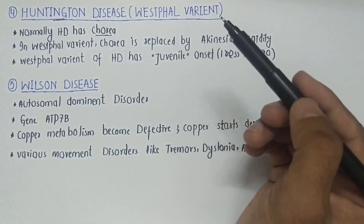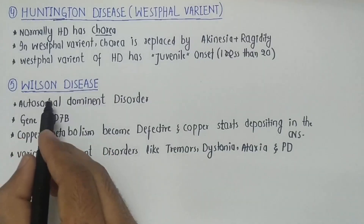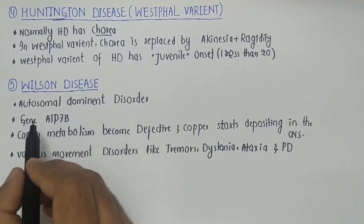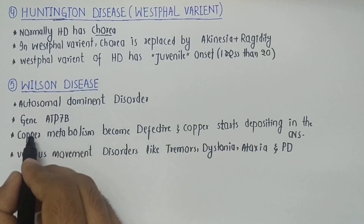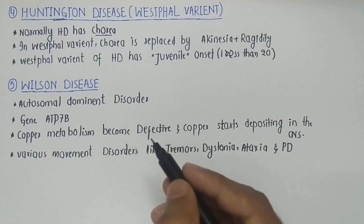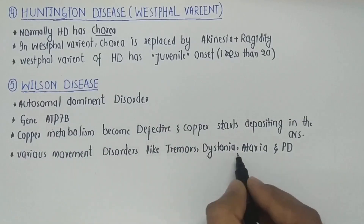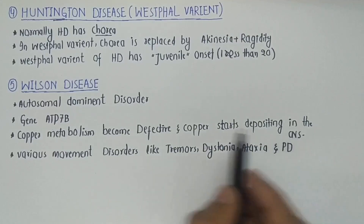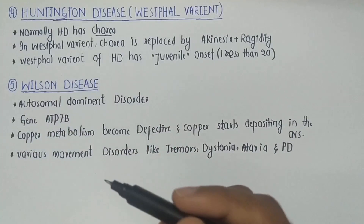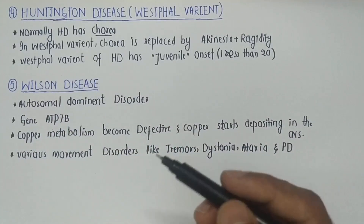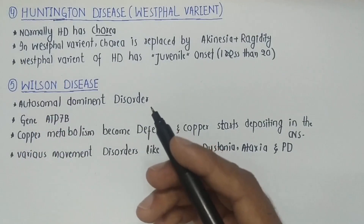The fifth Parkinson's plus syndrome is Wilson disease, an autosomal recessive disorder caused by a mutation in the ATP7B gene, leading to defective copper metabolism and copper deposition in the central nervous system. This manifests as various movement disorders including tremors, dystonia, ataxia, and Parkinsonian features. Always exclude Wilson disease in any patient under 50 years of age presenting with a movement disorder.